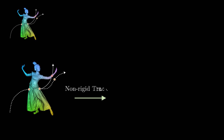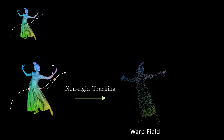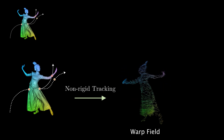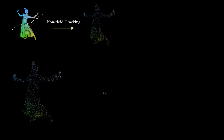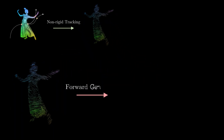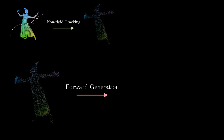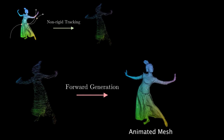To generate animated mesh, we continue to optimize the warp field using DeformNet. Finally, we can extract the animated mesh in the live frame via linear blend skinning.